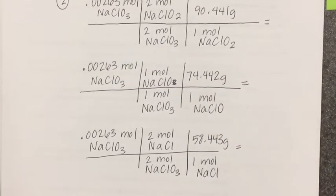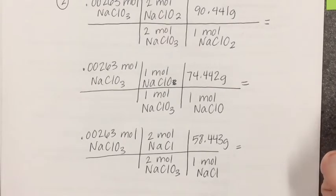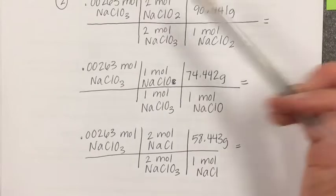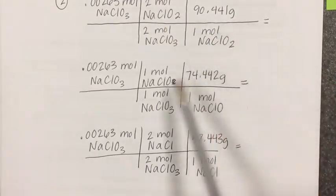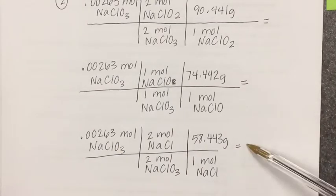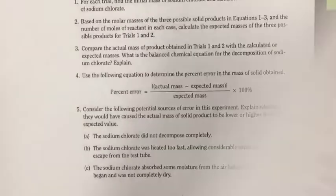Why are we doing this? Well, you guys got an actual amount of product left in your test tube. You need to compare it to these amounts to see which one it's closest to. And that gives you an idea of which equation was the right one. Did equation one happen? Did equation two happen? Or did equation three happen? Whichever one your mass is closest to, that's probably the equation that occurred in the test tube.